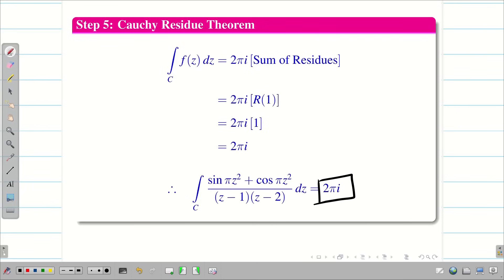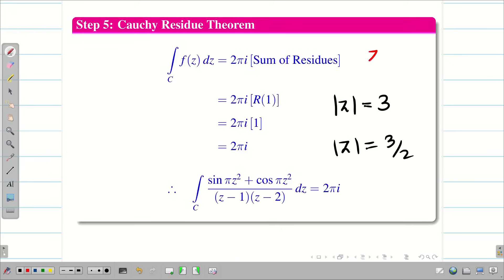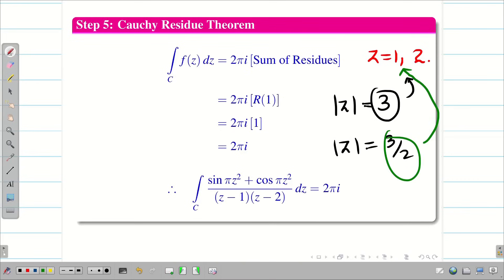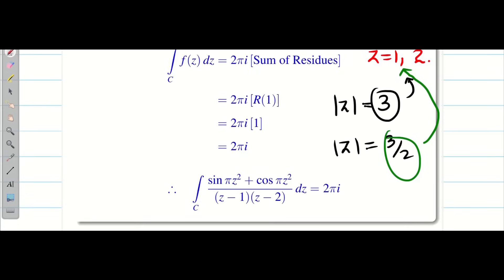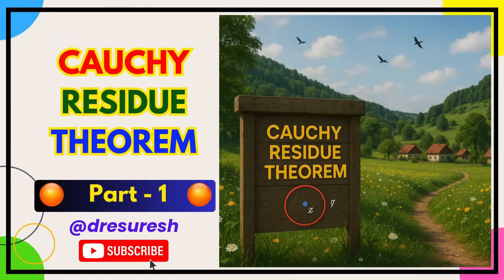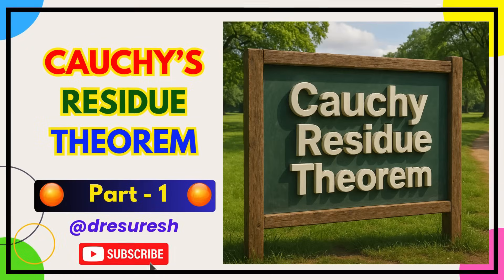The difference between the two examples is the region. In Example 1, the region is |z| = 3 with radius 3, so both poles z = 1 and z = 2 lie inside, giving 4πi. In Example 2, the region is |z| = 3/2 with radius 1.5, so only z = 1 lies inside and z = 2 lies outside, giving 2πi. Thanks for watching. Subscribe to our channel and share with your friends. See you in the next video.